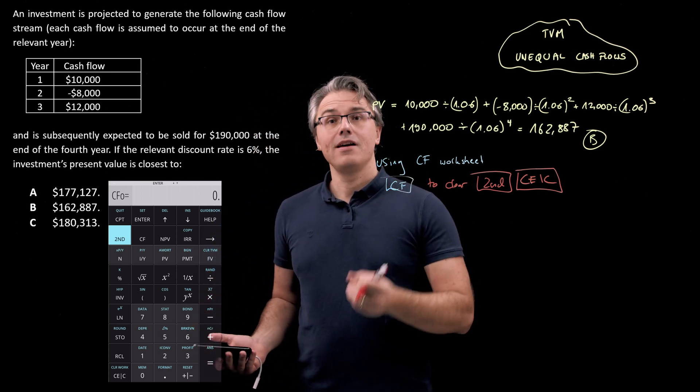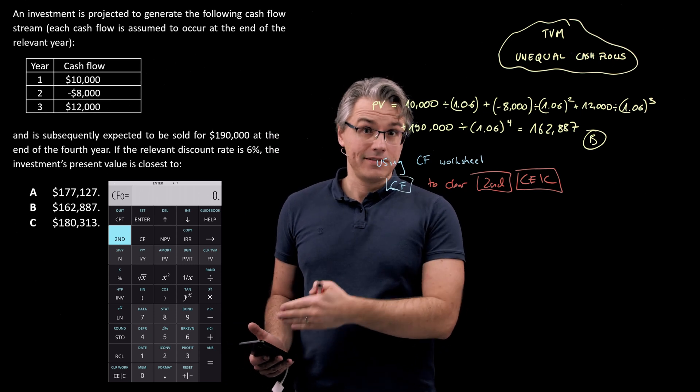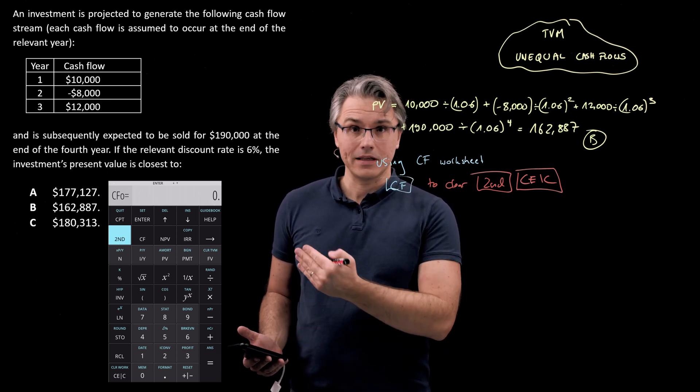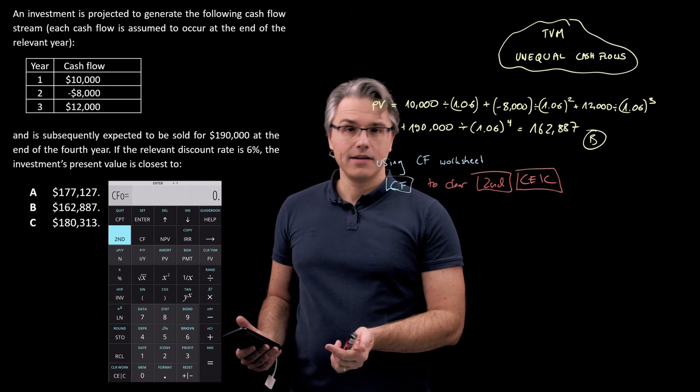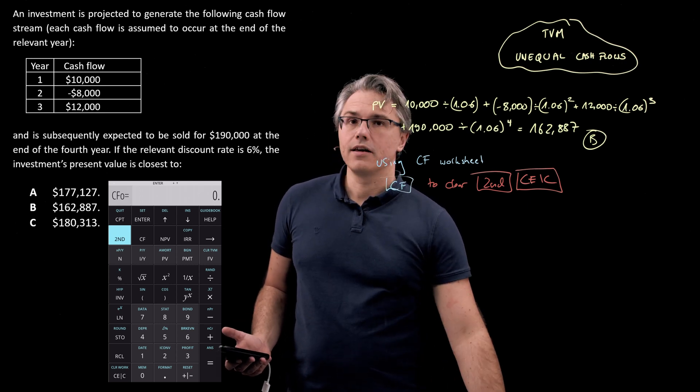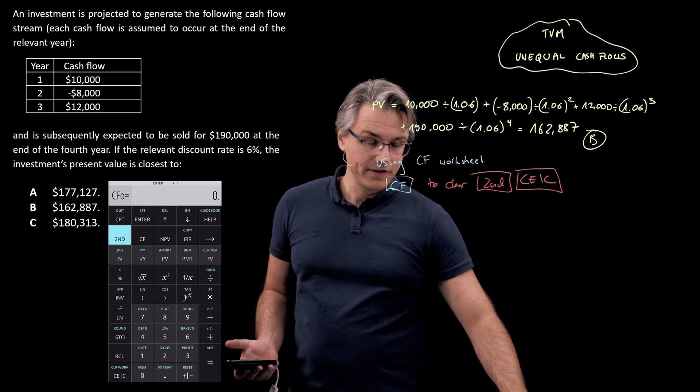And this key will work to clear whatever worksheet you're currently in. But you've got to be in the worksheet, which is why I pressed CF first, for it to work and to clear stuff, data which is stored under the relevant headings there. As you can see, CF zero all of a sudden became equal to zero. So it was effectively cleared.